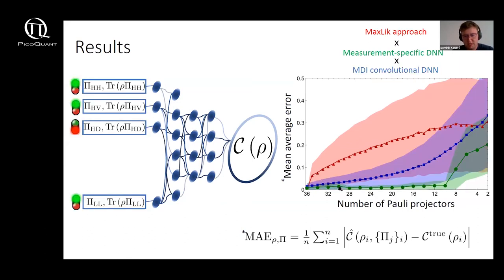But each point as I said on this green curve represents then a different deep neural network. So we asked ourselves to build now a deep neural network that will predict concurrence independently of the measurement device.